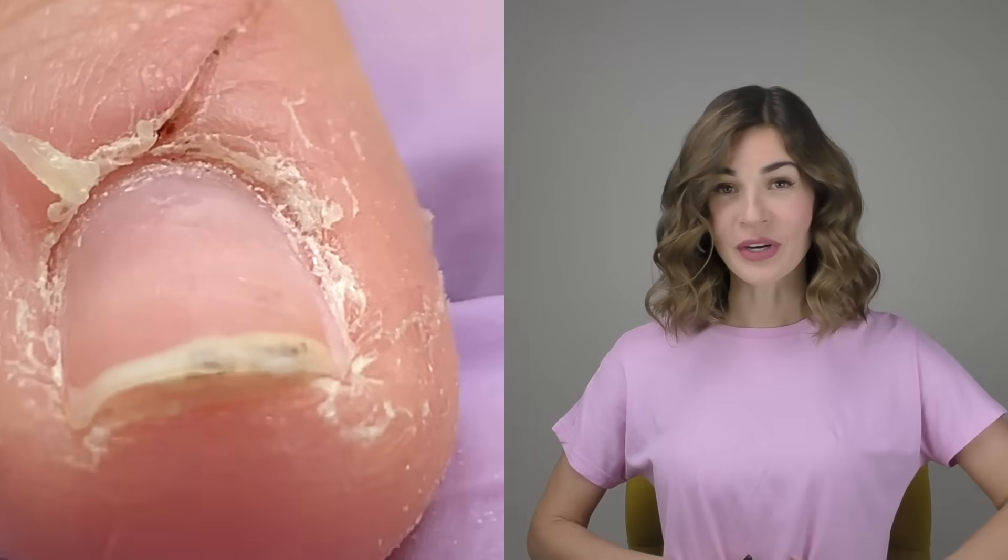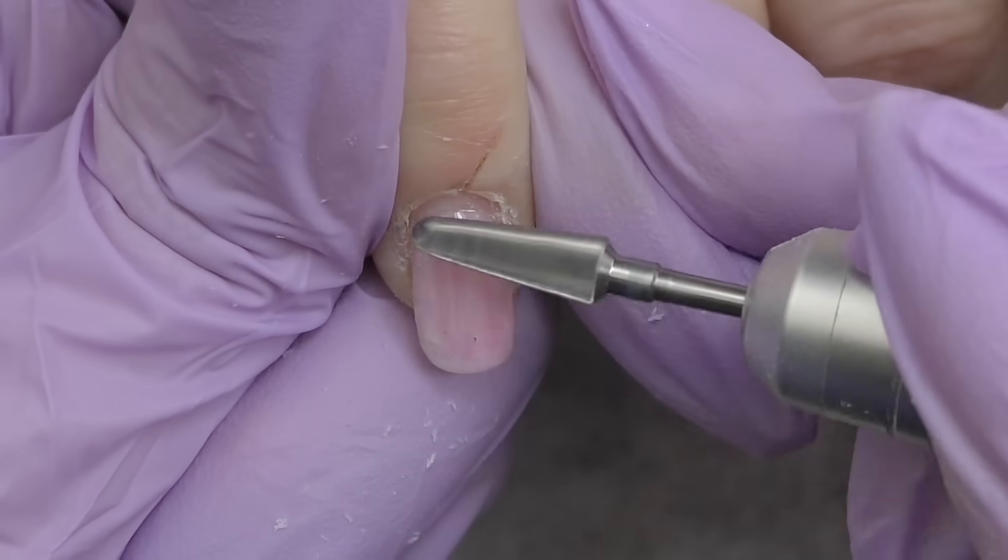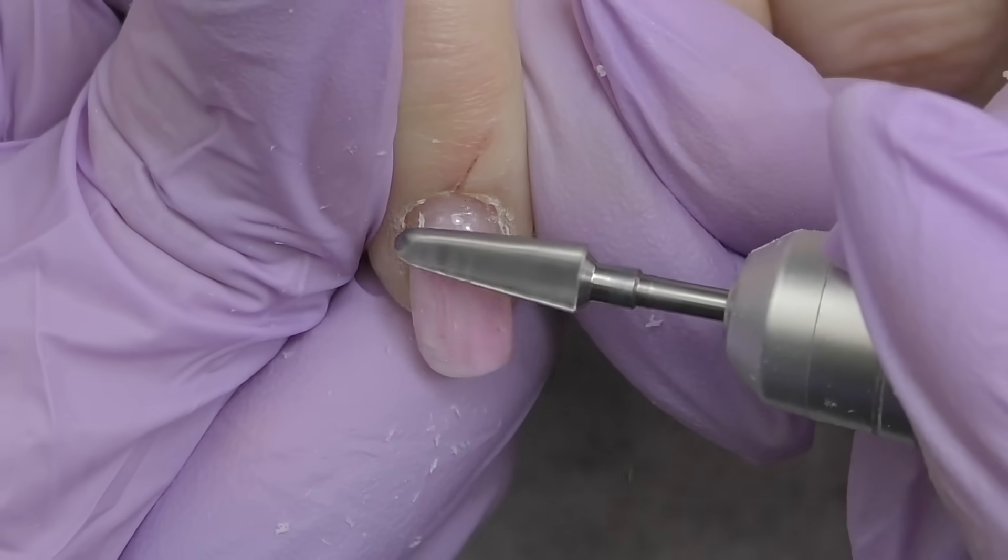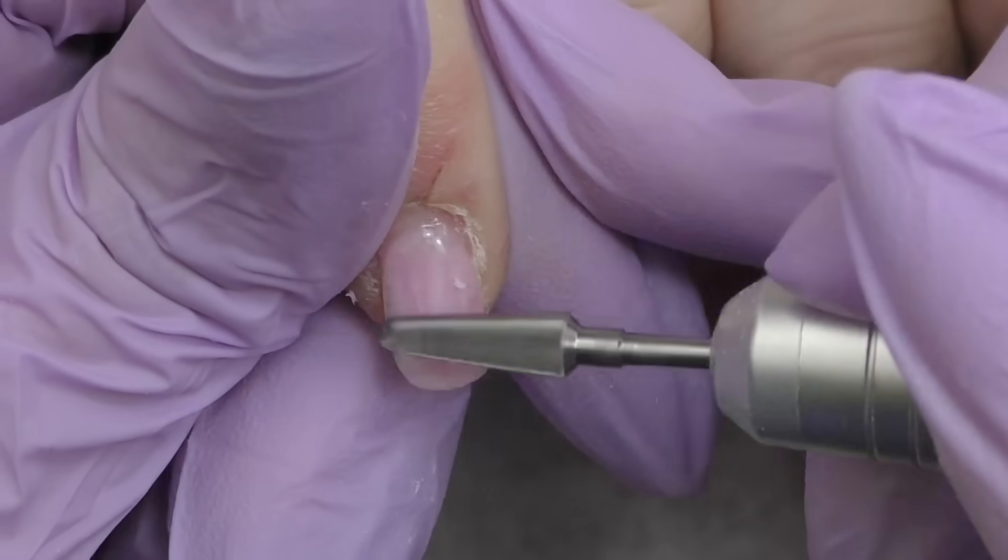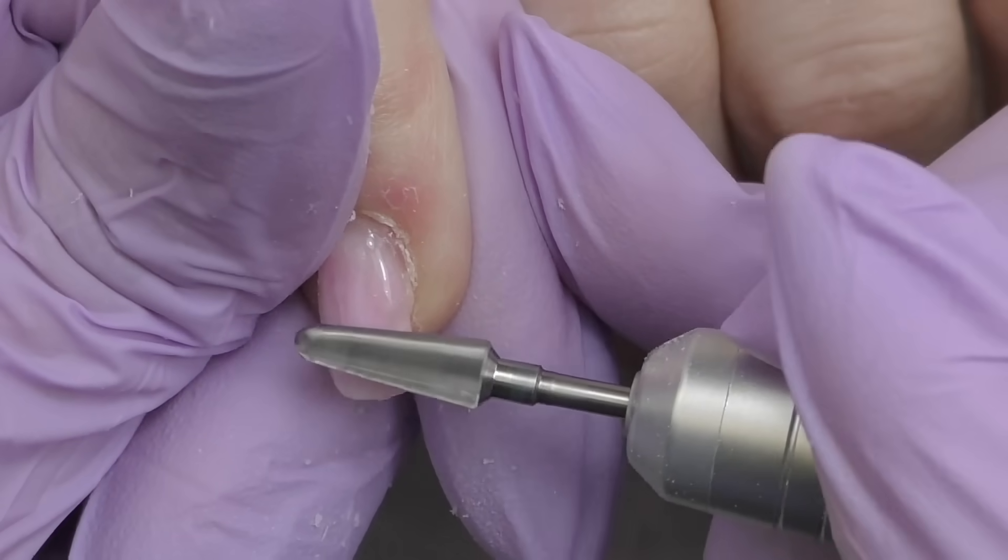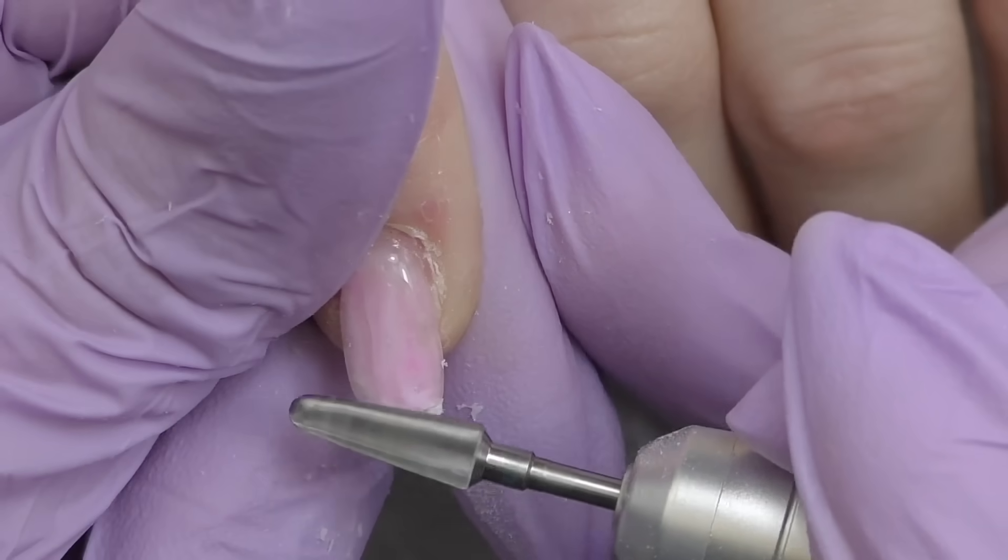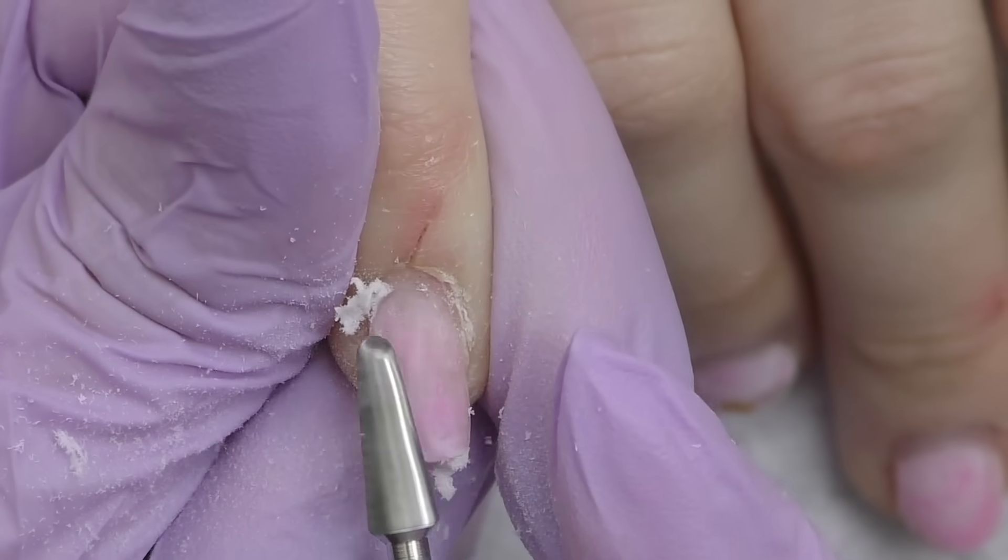But fear not, because we're about to work our magic and completely revamp her nails. First, we need to remove the old product. As far as I remember, we used polygel to do these extensions. So, I will be using carbide bead with blue abrasive mark. The speed is 25,000 rotations per minute. And I'm working extra carefully with this pinky nail because we have damaged cuticles here.